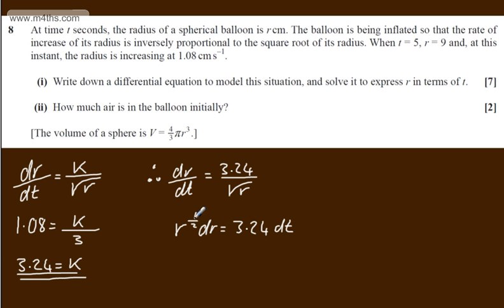So I'm going to integrate both sides, integrating on the left-hand side with respect to r and on the right-hand side with respect to t. Raise the power, divide by the new power. So this is going to become r to the 3 over 2 divided by 3 over 2, which is 2 thirds. So 2 thirds r to the 3 over 2 will be equal to 3.24t plus a constant of integration.